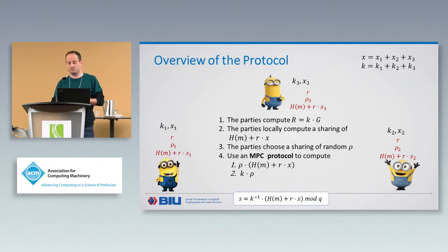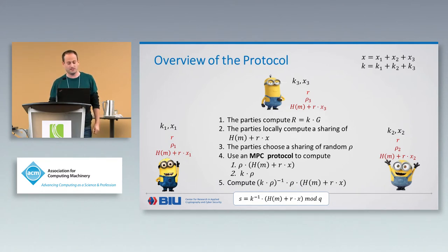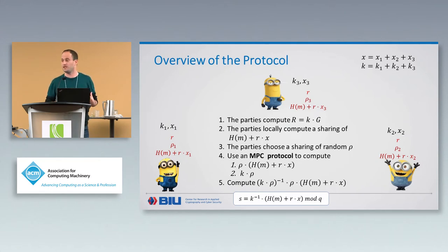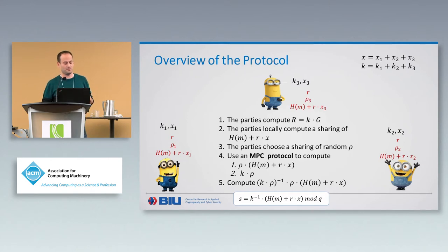Once the parties have these two revealed values, they take the inverse of the second one (K times Ro) and multiply it with the first one. The Ro and its inverse cancel each other, and we end up with the correct signature. The only remaining piece is to understand how this MPC secure multiplication sub-protocol works — we need it twice to multiply two values that are additively shared between the parties.